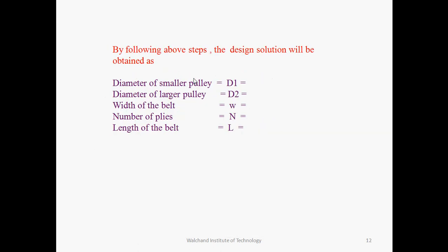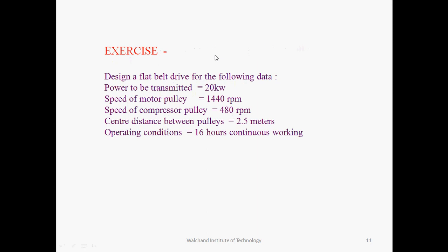Once all above steps are completed, the design solution gives: the diameter of the smaller pulley, the diameter of the larger pulley, the width of the belt, and the number of plies — all as standard values. This completes the design of the flat belt drive as set out in the objectives at the beginning. With these steps described in the video, I hope students can now design the flat belt drive using manufacturer's data. An exercise is provided as input for students to practice and obtain a proper solution.